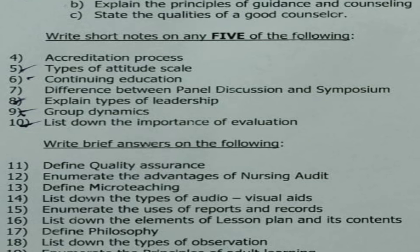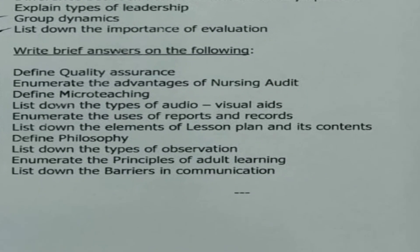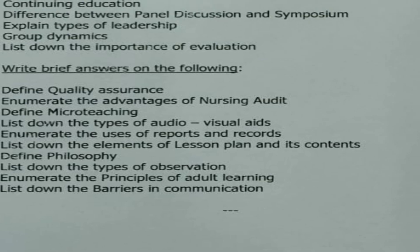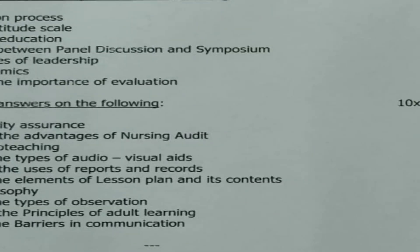The final section is two-mark questions — write brief answers on the following: define quality assurance, enumerate the advantages of nursing audit, define micro teaching, list down the types of audio-visual aids, enumerate the uses of reports and records, list down the elements of a lesson plan and its contents, define philosophy, list down the types of observation, enumerate the principles of adult learning, and list down the barriers of communication. Each question carries two marks, so 10 into 2 equals 20 marks.